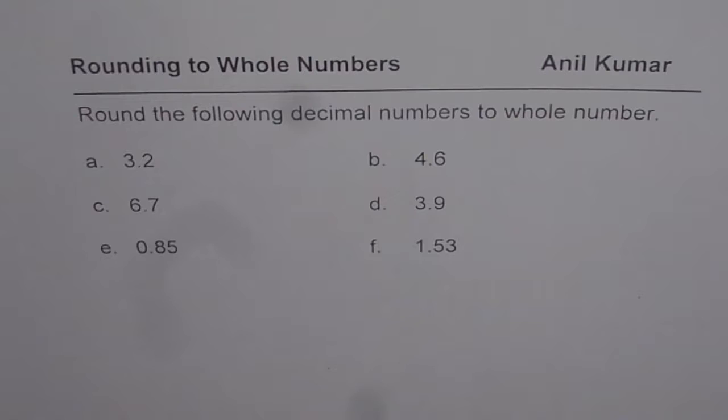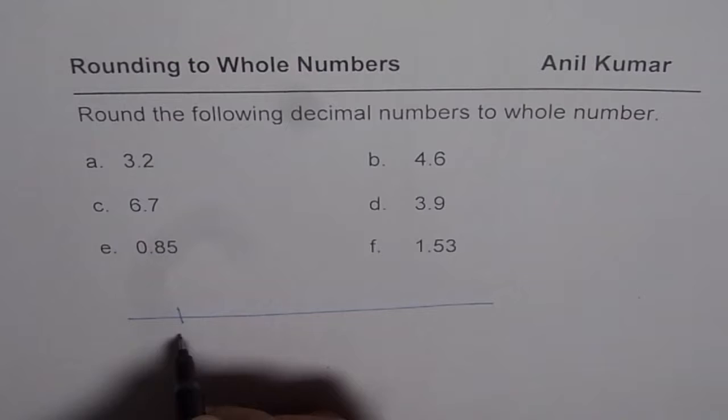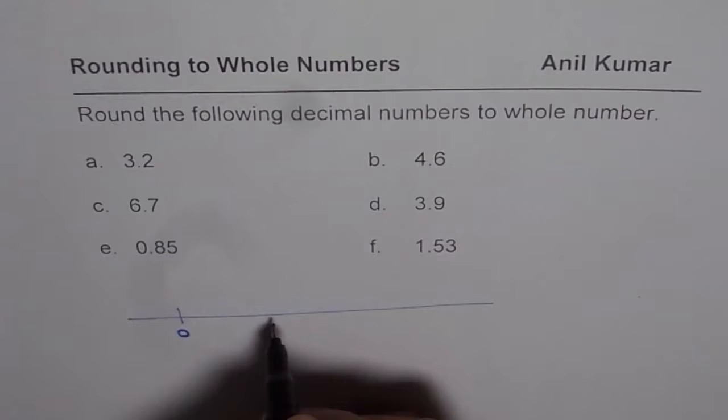Now rounding decimal numbers to whole numbers means what? Let us try to understand. We will understand 3.2 first. So if I have a number line, let us say this is 0 and this is...